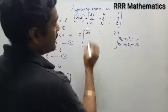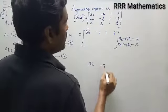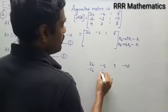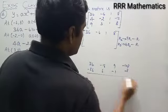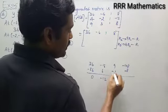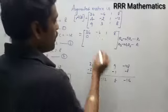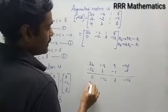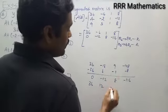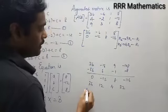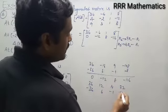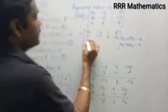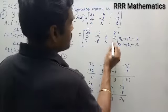9×R₂: 9×4=36, 9×(−2)=−18, 9×1=9, 9×(−12)=−108. Minus R₁ (−36, +6, −1, −8). Simplify: 0, −12, 8, −116. For 4×R₃: 4×9=36, 4×3=12, 4×1=4, 4×8=32. Minus R₁ (−36, +6, −1, −8). Simplify: 0, 18, 3, 24.